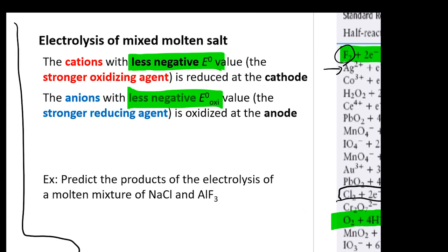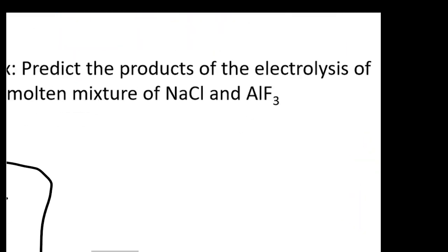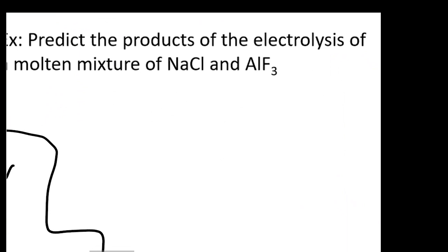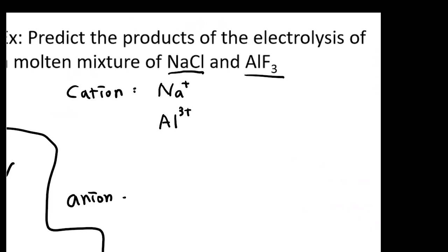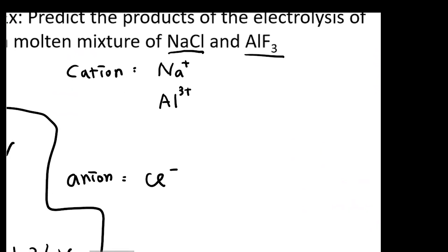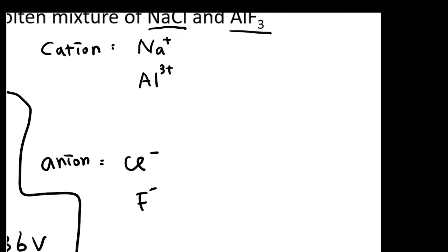Remember, pretty much all the potentials you see here will be negative because we are doing electrolysis — it tells you how much voltage you need to apply. Let's look at an example: predict the product of electrolysis of a molten mixture of sodium chloride and aluminum fluoride. The cations are Na+ and Al3+, and the anions are Cl- and F-. You need to find the corresponding reduction and oxidation potentials for each.